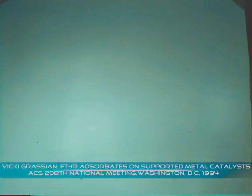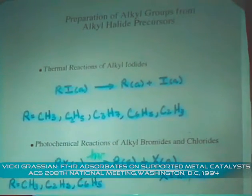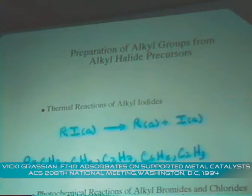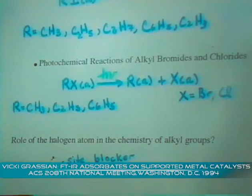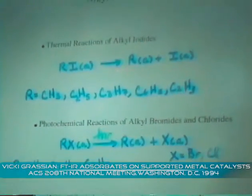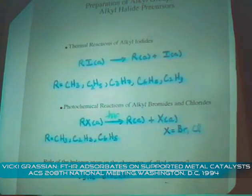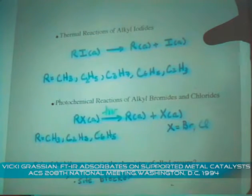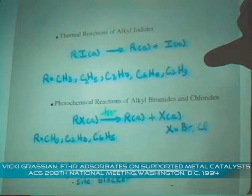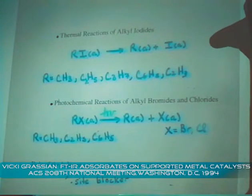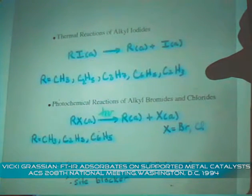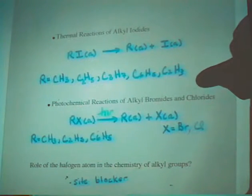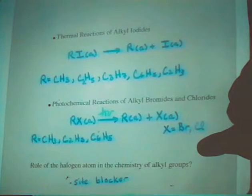Well, you might ask yourself, why are you interested in studying ethyl chloride on the surface? There's been a lot of work in the area of ultra-high vacuum and single crystal work where alkyl halides have been used as precursors for the formation of alkyl groups. When we increase the temperature to around 150 to 200 Kelvin, we see the R-I bond breaking, and you can form a variety of fragments on the surface. The role of the halogen atom in the chemistry of these alkyl groups, to first approximation, is simply a site blocker.